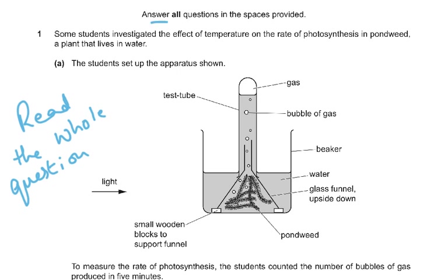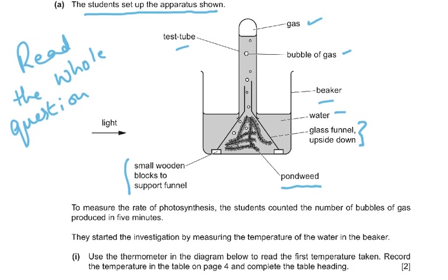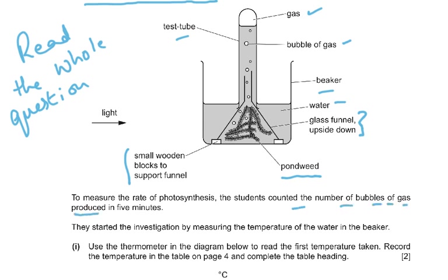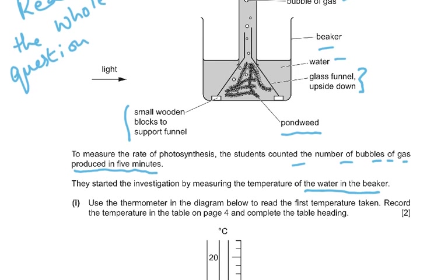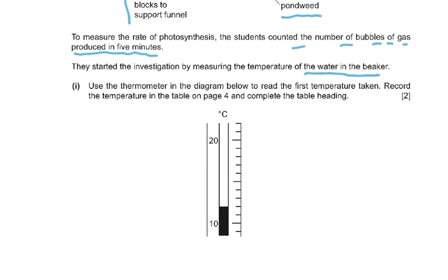Coming to the paper - answer all questions in the spaces provided. There is no choice in this paper. Question one: some students investigated the effect of temperature on the rate of photosynthesis in pondweed, a plant that lives in water. The students set up the apparatus shown - there are bubbles of gas, a test tube, a beaker with water, a glass funnel upside down, wooden blocks to support the funnel, and the pondweed. Use the thermometer in the diagram to read the first temperature taken.